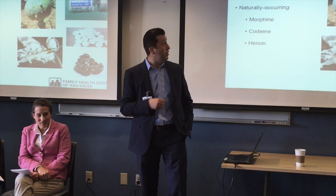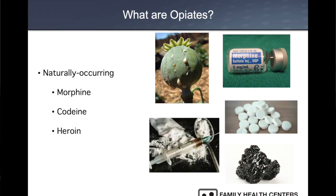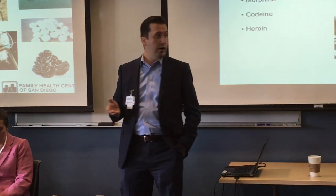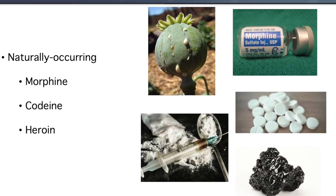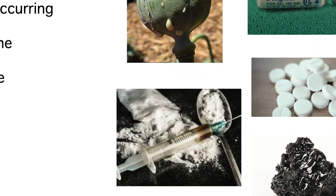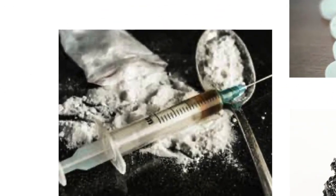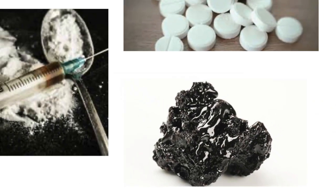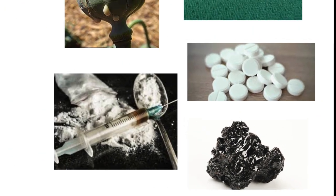Opiates are naturally occurring compounds that come from the opioid poppy plant. You can derive naturally occurring compounds such as morphine, which we use in the hospital in an IV formulation; codeine, which you can see in pills; and heroin, which many of you are aware of. There are two formulations of heroin — one is a white powder, often referred to as China White, and the other is black tar heroin, which is more prominent here on the West Coast.